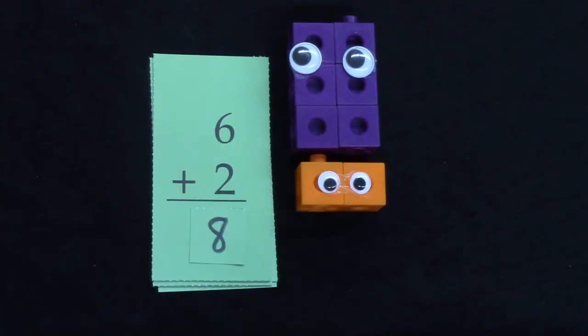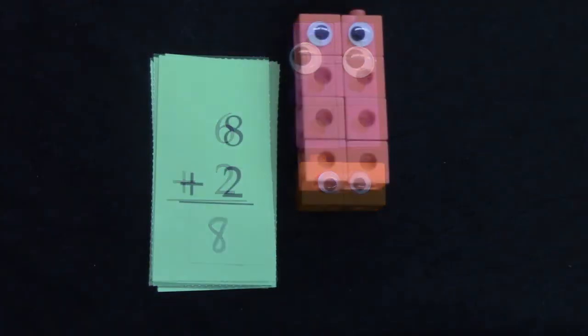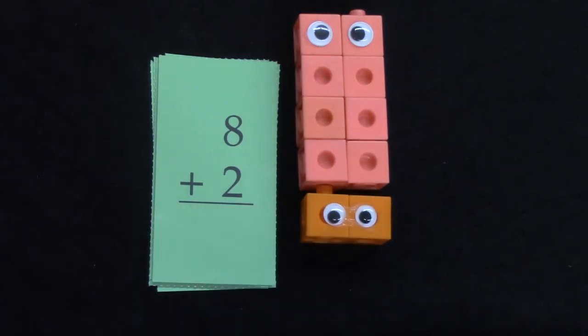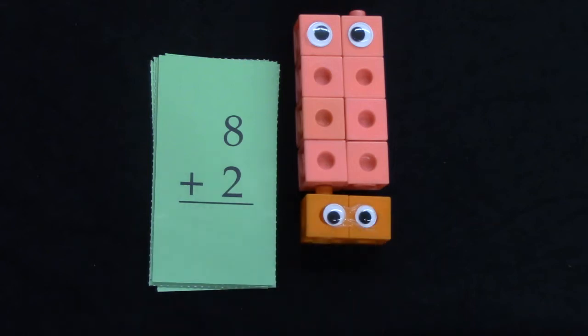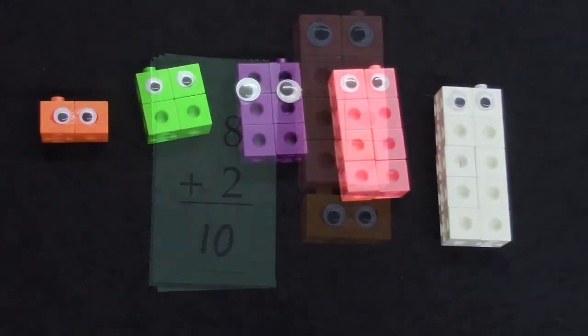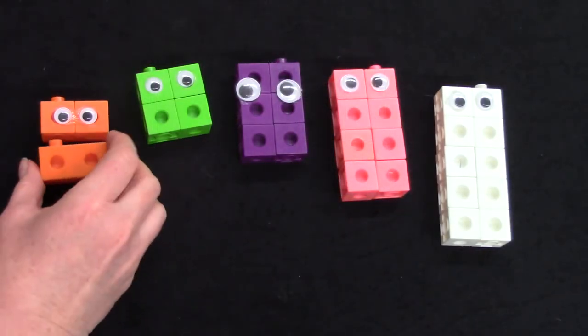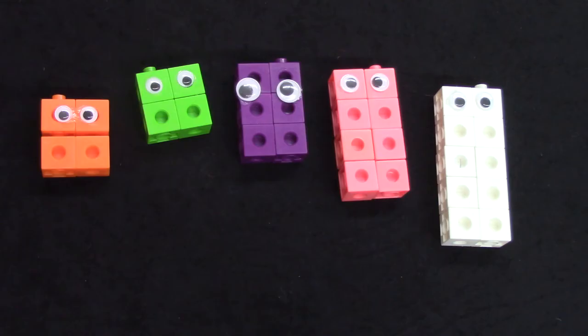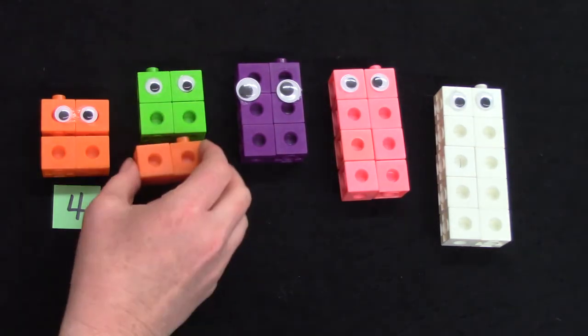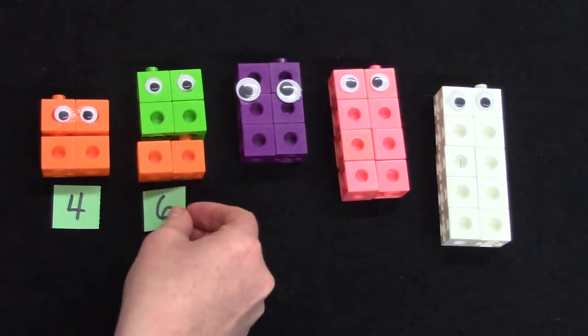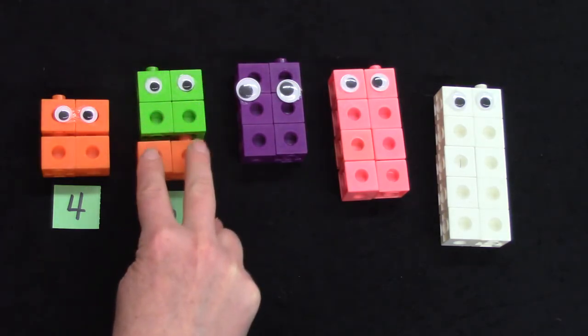8 snap cubes. If we have 8 snap cubes and we add 2 more, we have 4 snap cubes. If we have 4 snap cubes and we add 2 more, we have 4 snap cubes. If we have 4 snap cubes and we add 2 more, we'll have 6. 2, 4, 6.